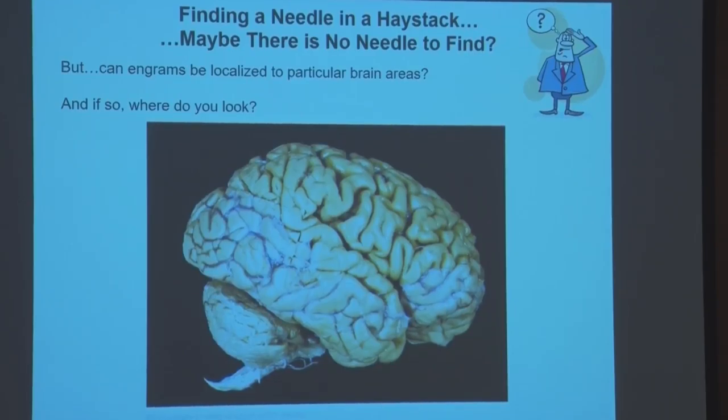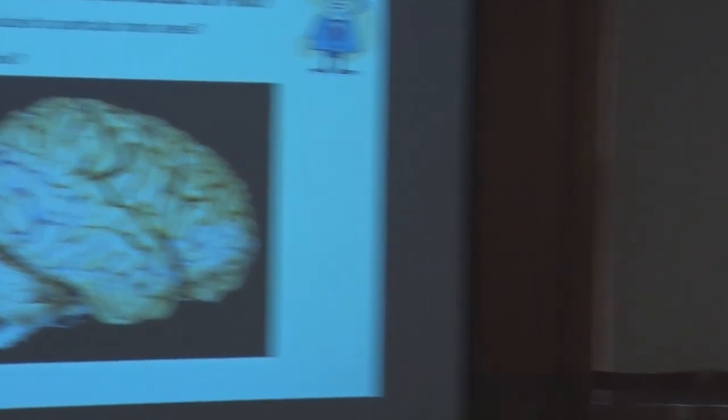So that's a definition of the engram as a physical memory trace. But where are those physical memory traces? Can they be localized? The brain is enormously complex — well over 100 billion cells, trillions of connections in the human brain. Can engrams be localized to particular brain areas, and if so, where do you even begin to look in this mass of tissue? Once you find them, you can study the types of changes that occur in that tissue that may be the actual physical basis of a memory. It's a daunting task when you step back and think about it.